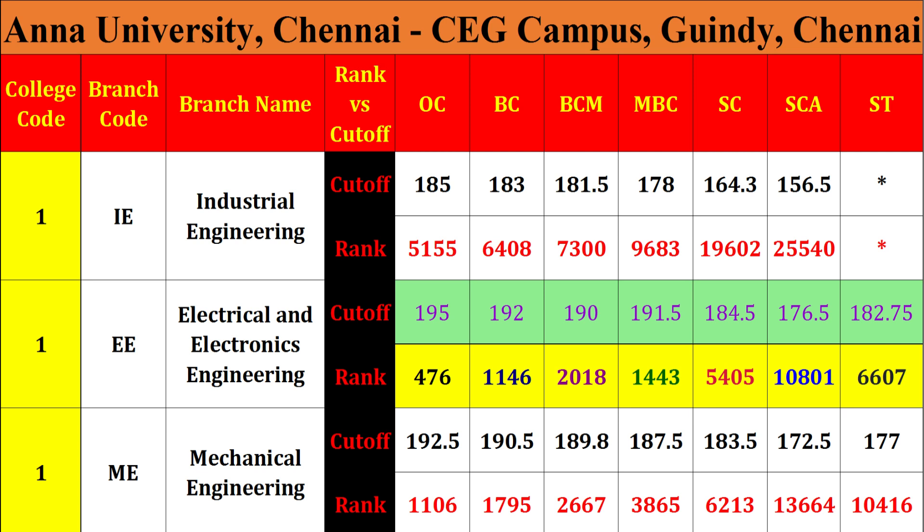Electrical and Electronics Engineering: OC rank 4–6. BCQ 192, BCM 190, MBC 191.5, SC 184.5, SC 176.5, ST 182.8. Ranks: BCA 1146, PCM 2018, MBC 1443, SC 5405, SC 10801, ST 6607. Triple E complete.